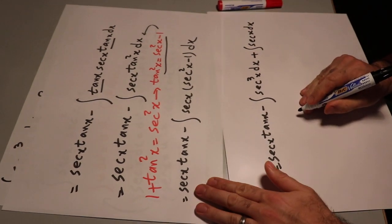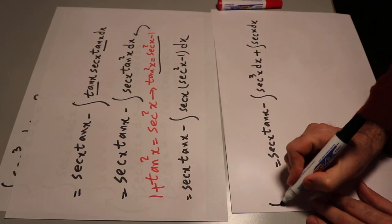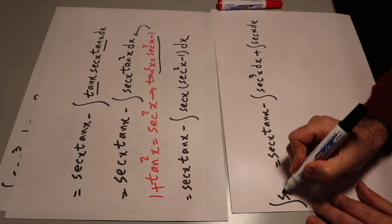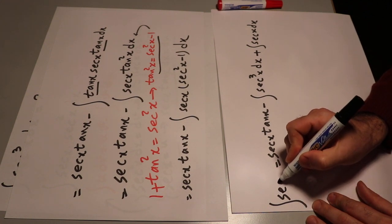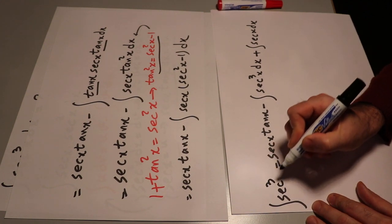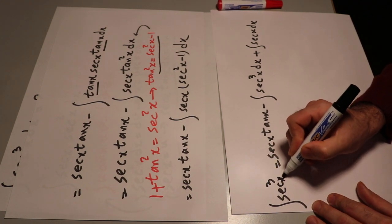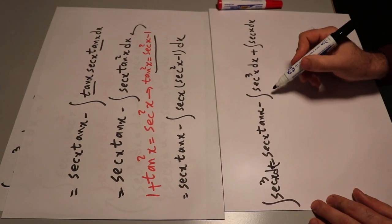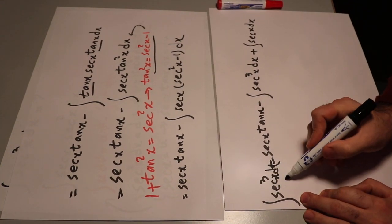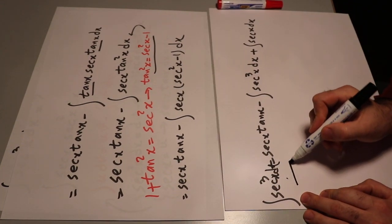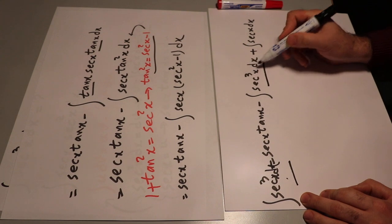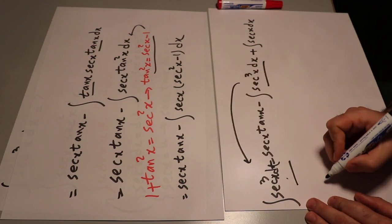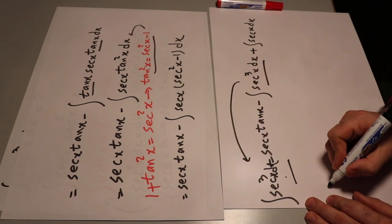And remember this is now equal to the integral of secant³x dx. So you have secant³x dx here and secant³x dx here, so you can bring this one to the other side of the equation.